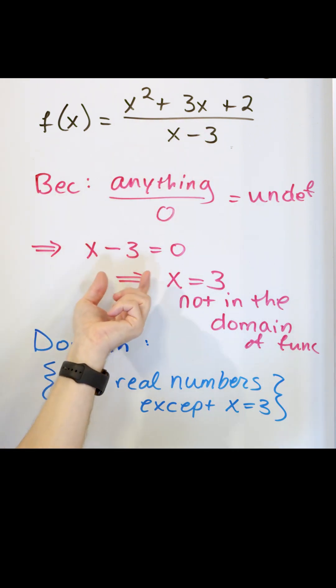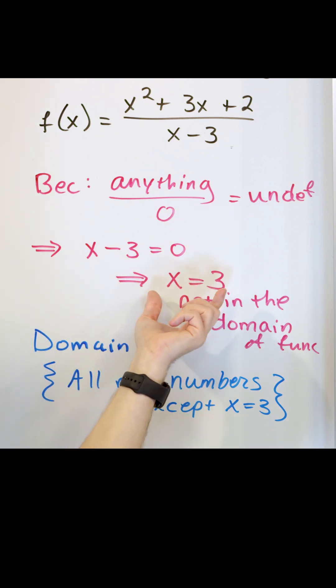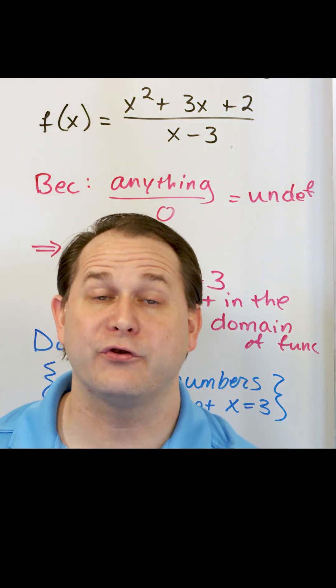So in this case, I set the denominator equal to zero. I solve it by moving three to the other side. X is equal to three is a problem. So I say the domain of this function is all real numbers except for three.